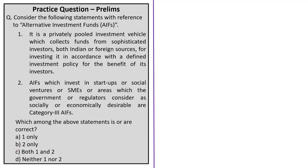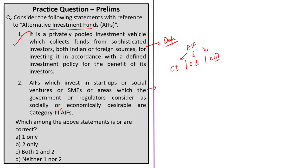The next question asks to consider statements with reference to alternative investment funds. The first statement gives the definition of alternative investment funds — this is correct. The second statement gives a description that is not the definition for Category 3 AIFs, but rather for Category 1 alternative investment funds as discussed during our analysis. The question asks for correct statements, so the correct answer is option A (only statement 1).